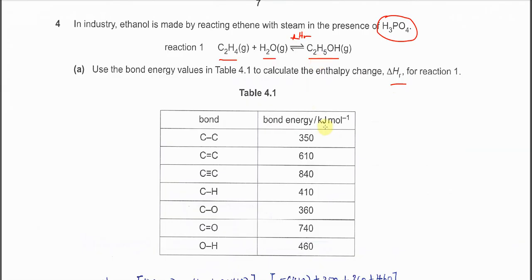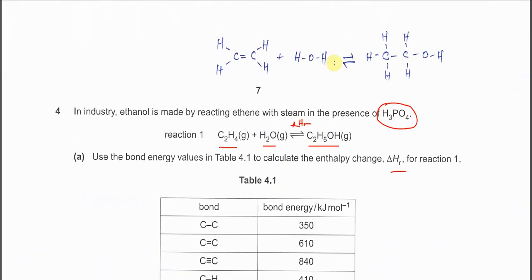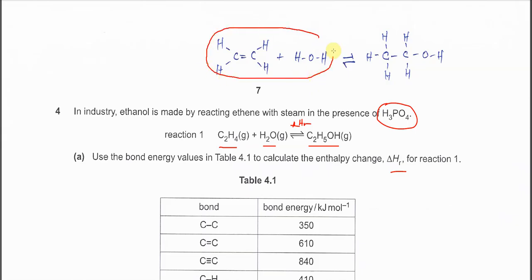First, you need to understand how to use bond energy for the calculation. In any reaction, in order to form products, the reactants must undergo bond breaking. The first step is the bond breaking of all the reactants. Bond breaking involves the absorption of energy, which is endothermic. That's why this part is positive — energy is needed to break all the bonding.